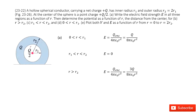In this system we have a hollow spherical conductor. Being a conductor, the charge is distributed as a surface. We know the net charge is a positive Q, with inner radius R1 and outer radius R2. Also, at the center of this spherical object there is a point charge Q over 2. Look at this picture.